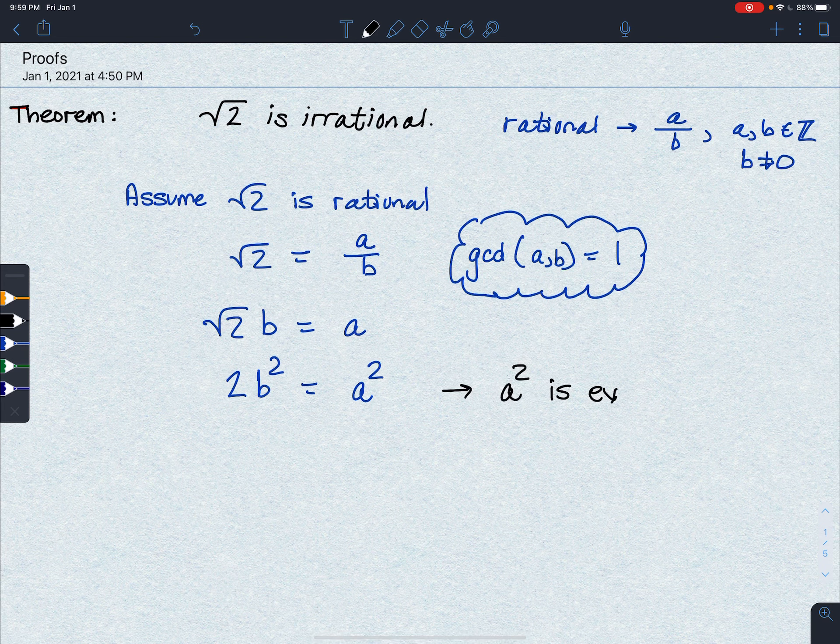So this means that a can be expressed as 2, well, pick a letter we haven't used yet, k, where k is an integer. That is saying that k is an element of the integers. So then we're just going to go through and substitute that and see what happens.